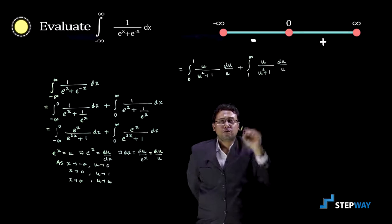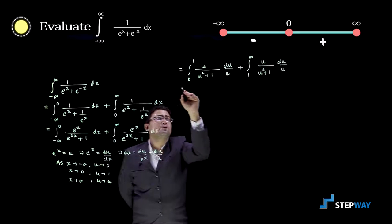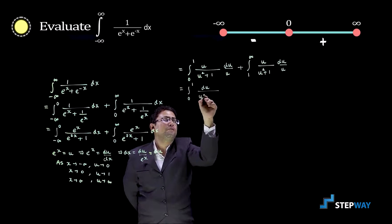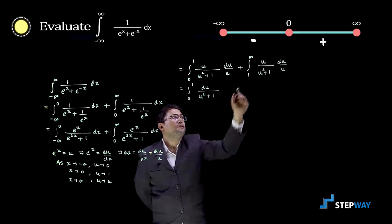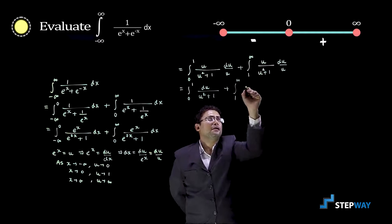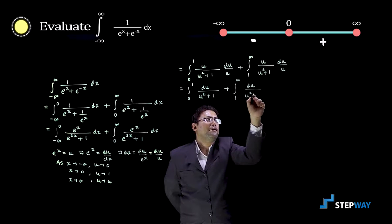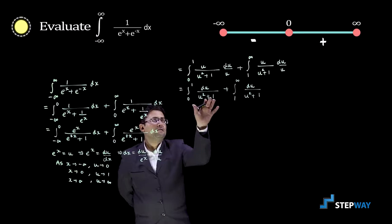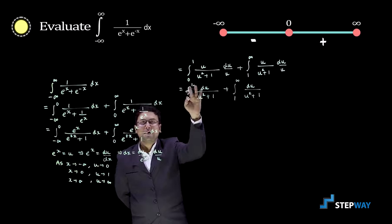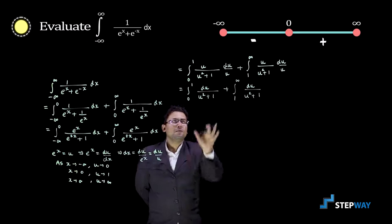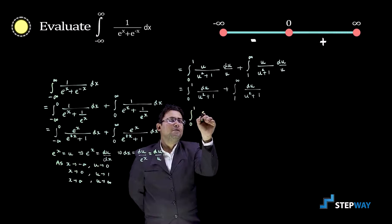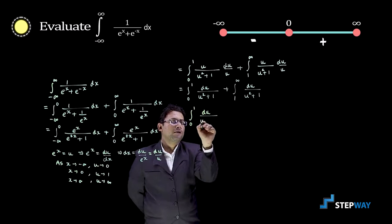After cancellation, we obtain integration from 0 to 1 of du upon u squared plus 1, plus integration from 1 to infinite of du upon u squared plus 1. The first is a proper integral with both limits finite, and the second is an improper integral with upper limit infinite.